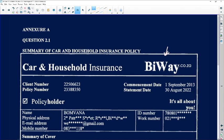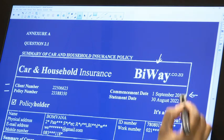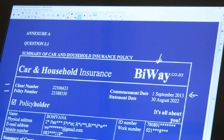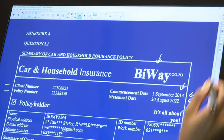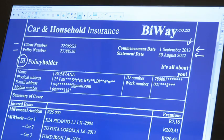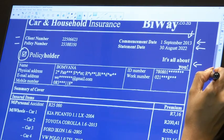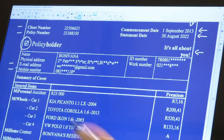The document shows the client number, policy number, commencement date when the person started the policy, and statement date when it was printed. This person started in 2013 and this statement is for August 30, 2022. The person is a policy holder. We've got the name, address, email, and mobile number. The stars protect the person's details from being stolen.